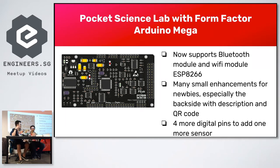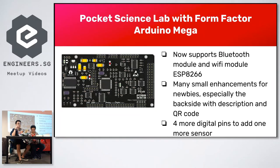We actually support this with a placeholder for an ESP Wi-Fi module at the back, which is currently empty. And of course, some small enhancements compared to the Uno — for example, for easy access, there's a QR code at the back for you to scan to go to the website.